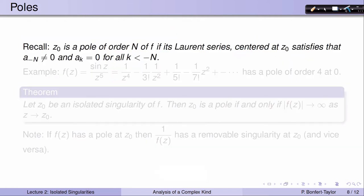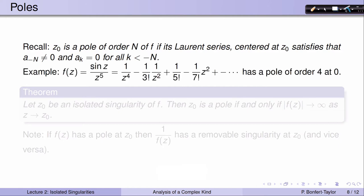Next, let's look at poles. Remember that z0 is a pole of order n of a function f if the Laurent series of f centered at z0 satisfies that the a_{-n} term is non-zero, but any other a_k for k less than -n are equal to 0. Here's another example: sin(z) over z⁵. Since sin(z) = z - z³/3! + z⁵/5! - ..., dividing by z⁵ gives 1/z⁴ - 1/(3! · z²) + 1/5! and so forth. The most negative power of z is 1 over z⁴ — there's no 1/z⁵ or higher. So we have a pole of order 4 at 0 for this function.